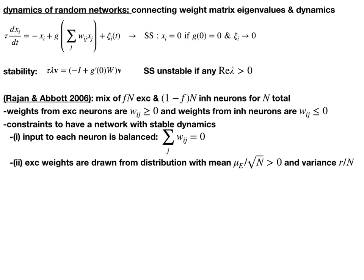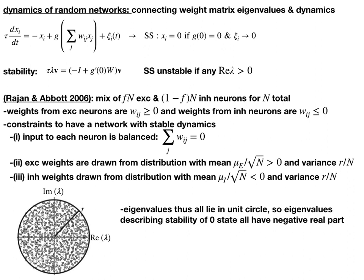So as you add more and more neurons, then you're not having more and more variability overall in the network. A similar assumption on the inhibitory weights, variance at scales like one over n, mean that scales like one over square root of n. And what we find in this case is if we use these three assumptions, what we have is that the eigenvalues of w all lie in the unit circle. So the real part is bounded between minus one and one. So what does that mean? If I look up at the eigenvalue equation up here, if g prime is zero and minus i basically shifts eigenvalues to the left by one, we have that none of the eigenvalues can have real part greater than zero in the full eigenvalue equation. So they all have negative real part and they're stable.